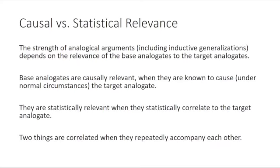If the dog could talk, we might ask him why he was salivating. He might say because he heard the bell ring and the bell makes food come — he thinks there's a causal relation between the bell and the food. But in fact, there is no causal relation because the bell did not cause the food to come. It's merely the case that they had been correlated: every time the bell rang, food came. Correlation between two things is not the same as causation.